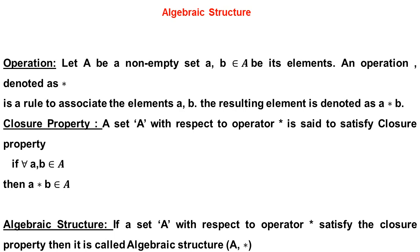What is closure property? A set A with respect to operator star is said to satisfy closure property if for any a, b belonging to A, then a * b also belongs to A. If this property is satisfied, and a set A with respect to operator star satisfies the closure property, then it is called an algebraic structure.